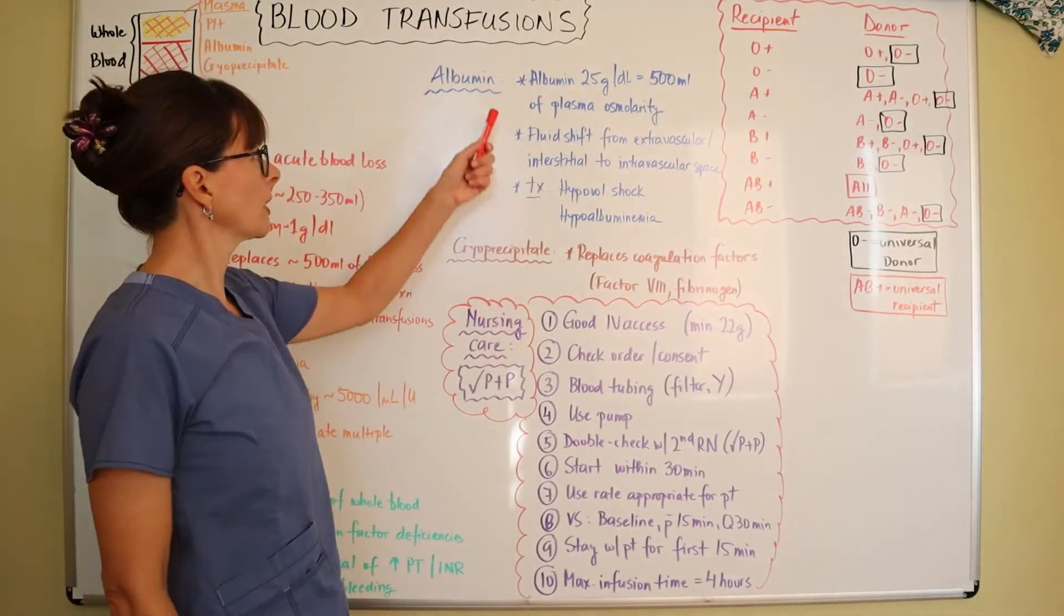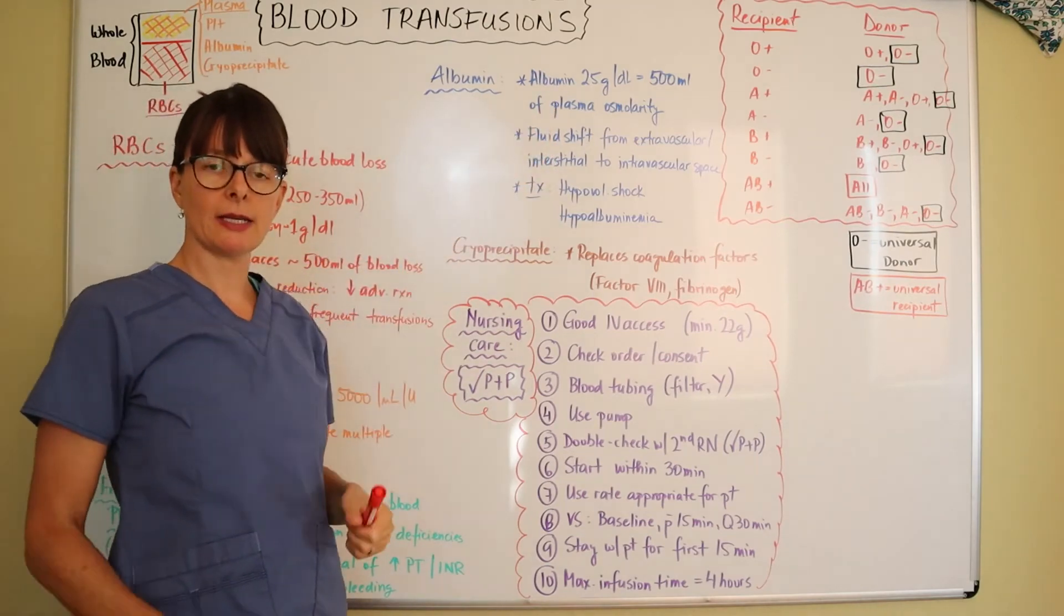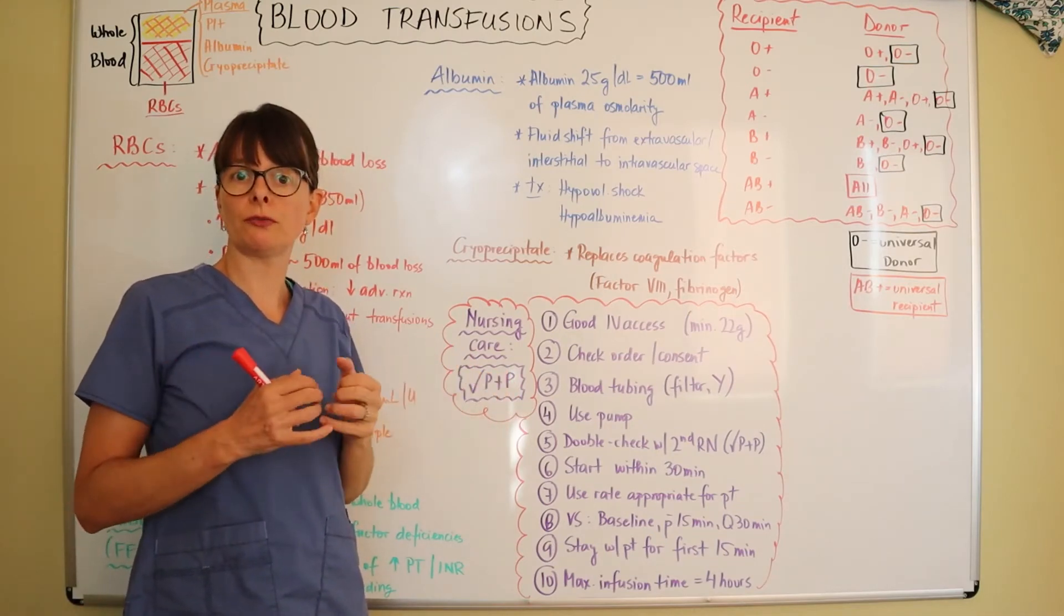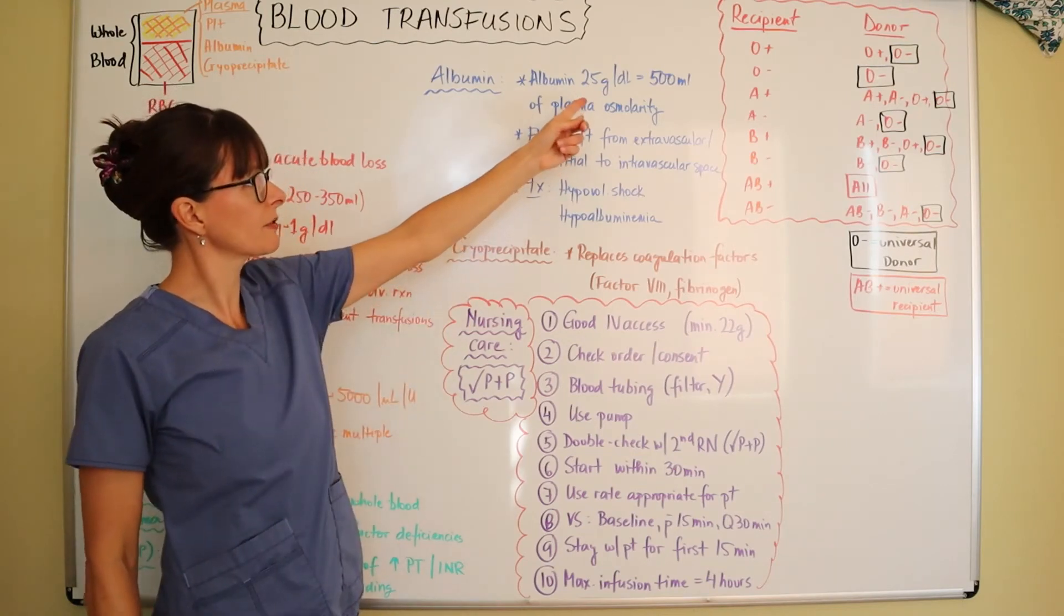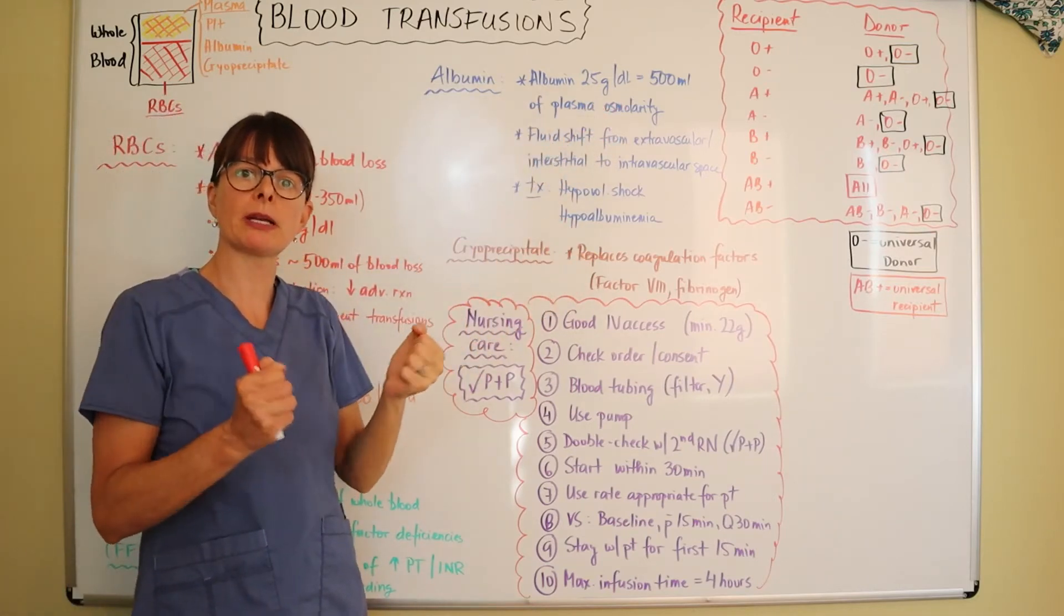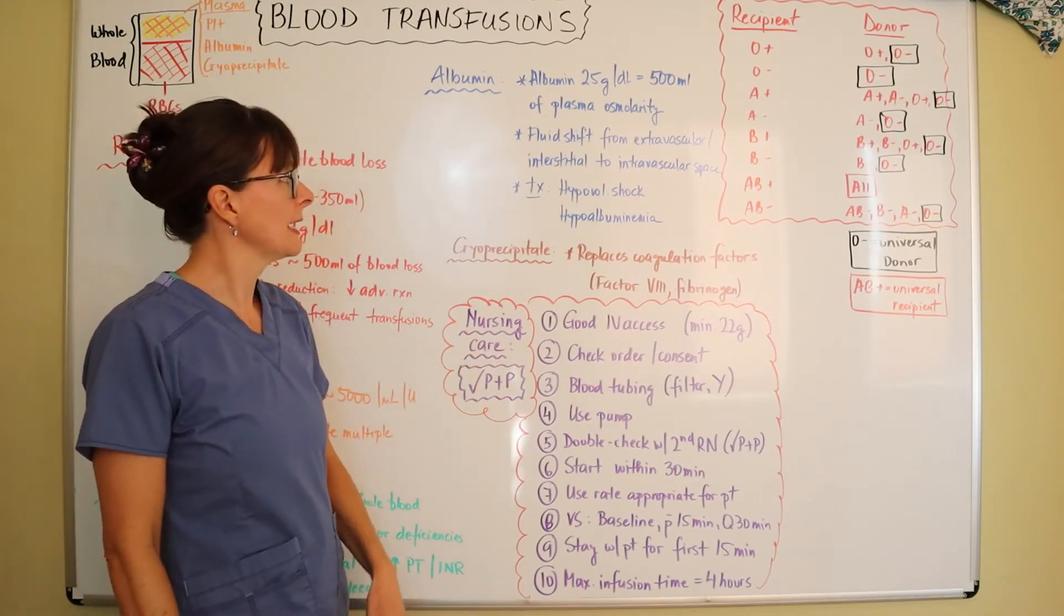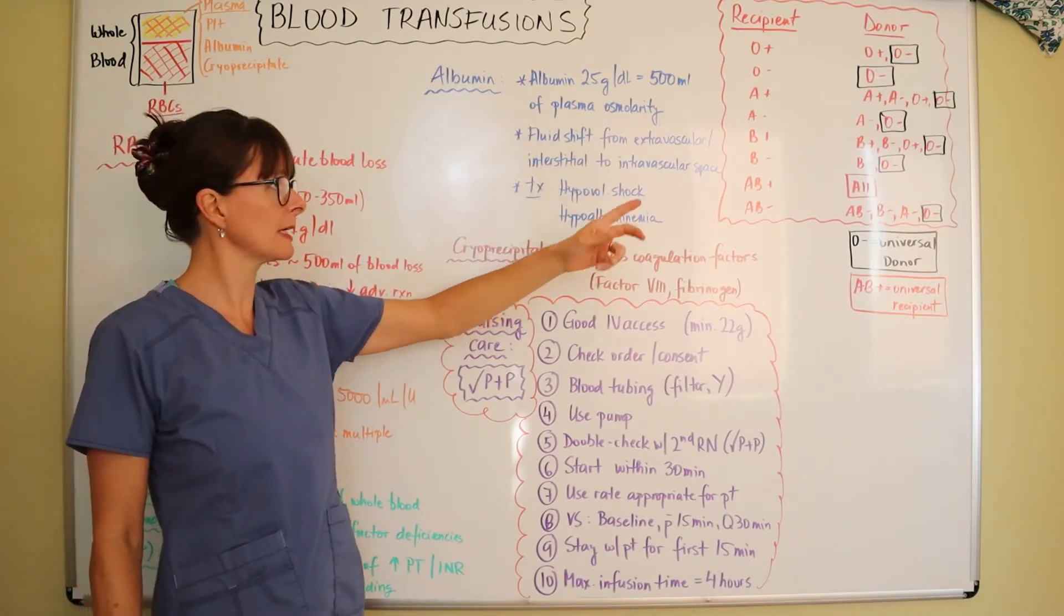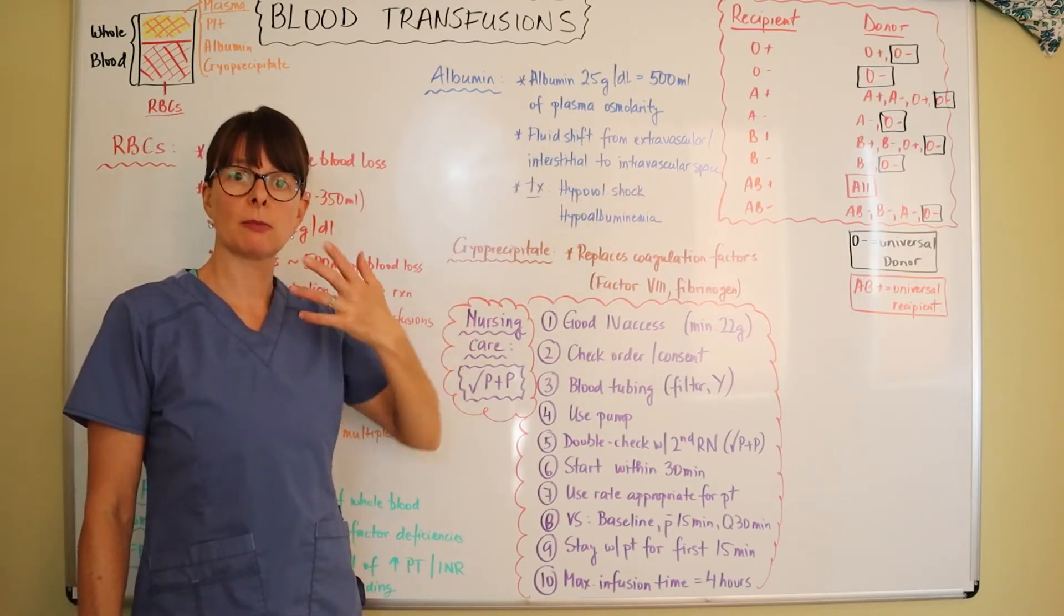The other portion we can administer is albumin. Albumin is a plasma protein that helps pull the fluid or hold the fluid in the intravascular space. About 25 grams per deciliter equals 500 ml of plasma osmolarity because it has that ability to pull the fluid into the intravascular space. It causes a fluid shift from the extravascular or interstitial space into the intravascular space.